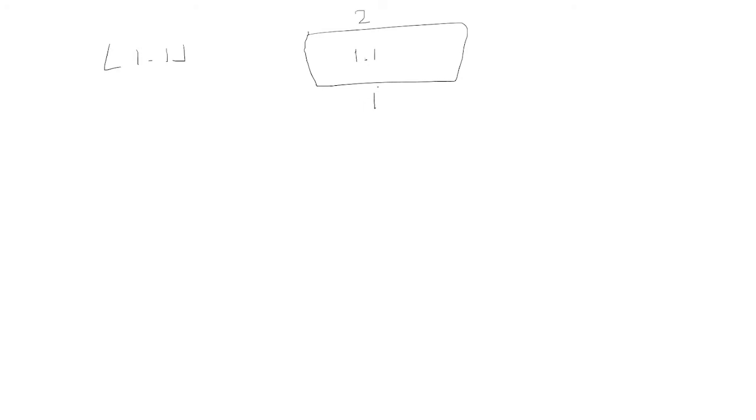Let's look at the floor of 1.1. It's important to understand why they call it a floor and why they call it a ceiling. Let's pretend we're in a room and let's have this number be somewhere between the floor and the ceiling. What is the number that is less than 1.1, the nearest whole number? Well, that's going to be 1. And what is the nearest whole number that is greater than 1.1? That's 2. So if we're talking about the floor function, the floor is on the bottom, and for the ceiling function, the ceiling is at the top.